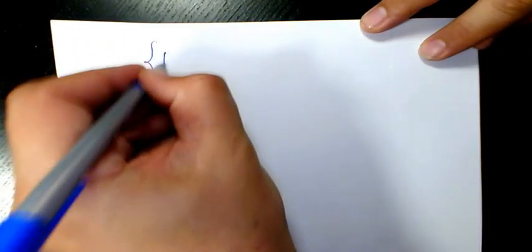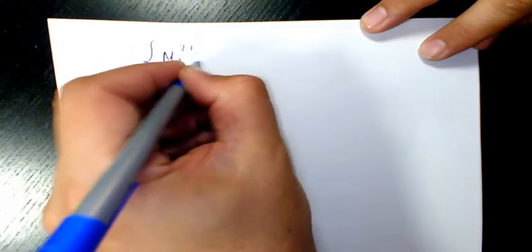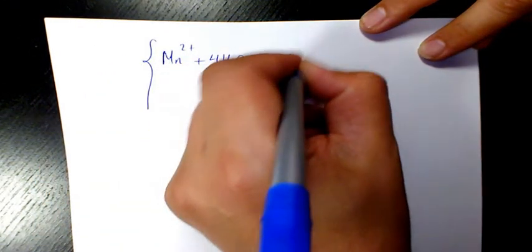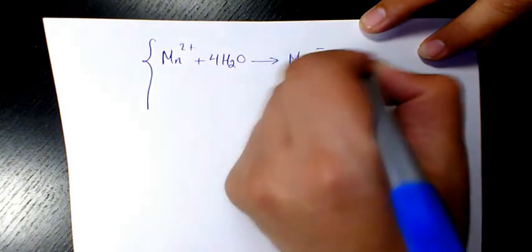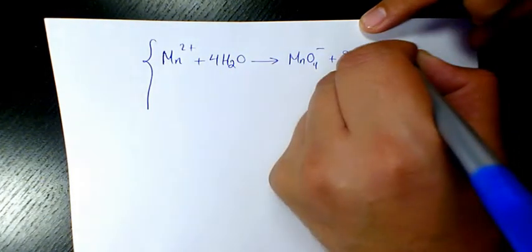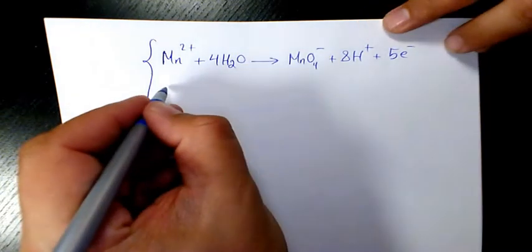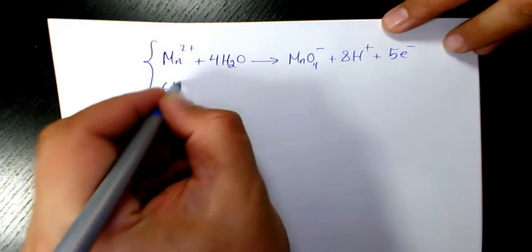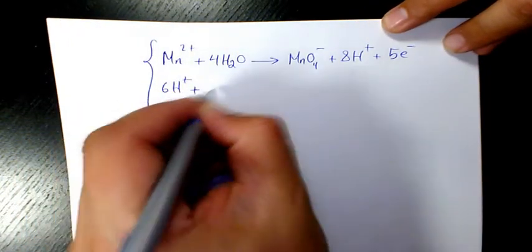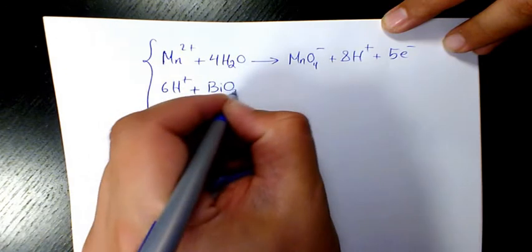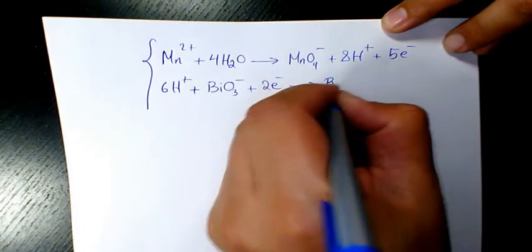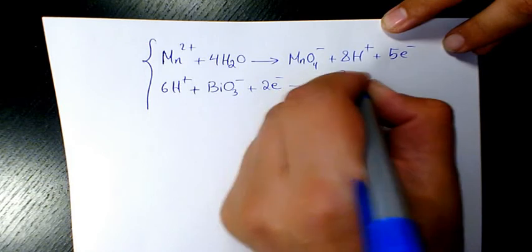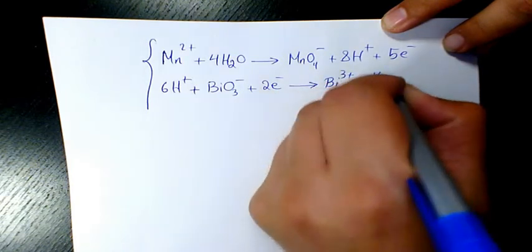So the two balanced half reactions are: Mn²⁺ + 4H₂O → MnO₄⁻ + 8H⁺ + 5e⁻, and 6H⁺ + BiO₃⁻ + 2e⁻ → Bi³⁺ + 3H₂O.